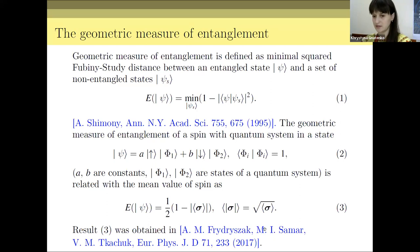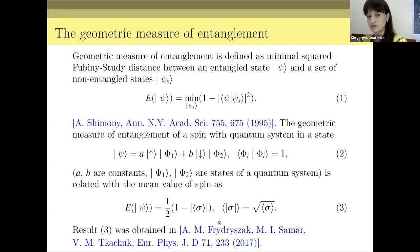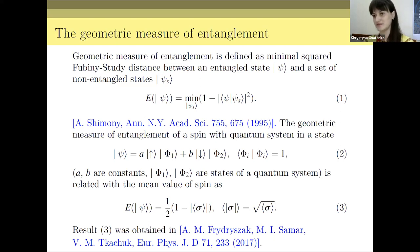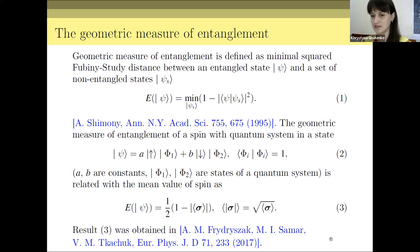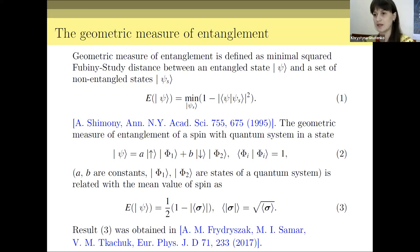In the paper presented in this slide, the authors — Professor Tukoczuk, Dr. Samar, and Professor Andrzej Friedrichsak — showed that the geometric measurement of entanglement is related to mean spin. So if we would like to calculate the entanglement of one spin with other spins in the system, we can calculate only the mean value of that spin. This paper also considers mixed states with very nice results. We focus on this relation because it gives us the possibility to calculate the geometric measure of entanglement on a quantum device.